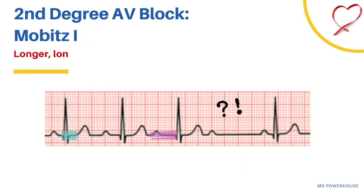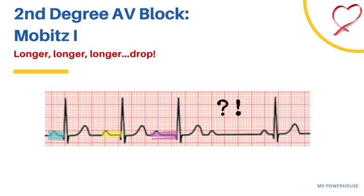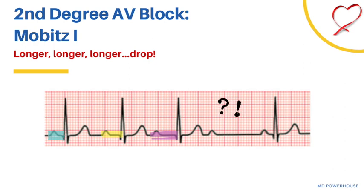Now let's look at second degree AV block. There are two types: Mobitz type 1 and Mobitz type 2. Mobitz type 1 is also called a Wenckebach block. In this AV block, you have progressively longer PR intervals and then a dropped beat. Looking at the PR intervals highlighted in blue, yellow, and purple, you can see they get progressively longer and then there is a dropped beat — longer, longer, longer, drop. This is Wenckebach.